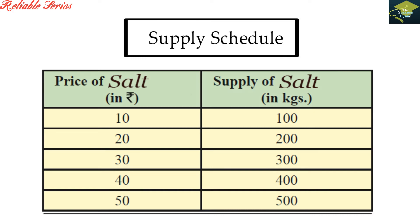Thus, इस schedule से हमें समझ आया कि price और supply quantity में direct relationship होता है. जब price ज्यादा हुआ, यानी 50 रुपीज, तब supplied quantity भी ज्यादा हो गई — 500 kg. और जब price कम था, 10 रुपीज, तब supplied quantity कम थी — 100 kg.